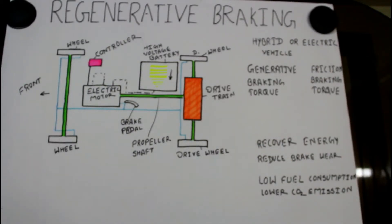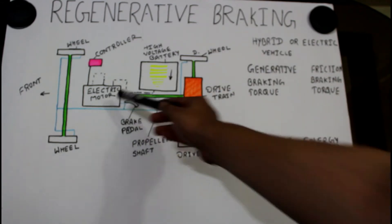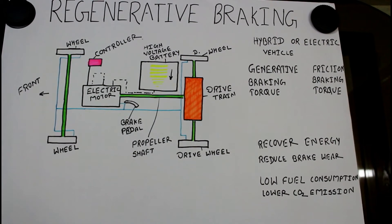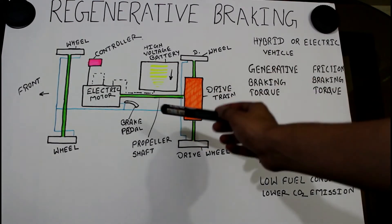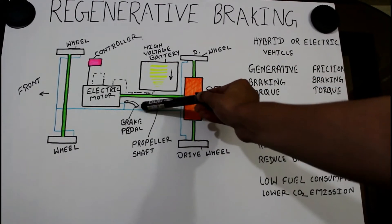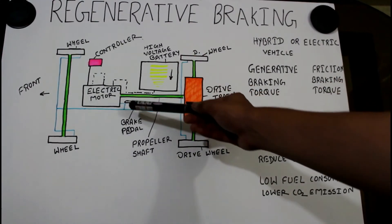As you all know about the electrical motor, when deceleration is required, we press the brake pedal and the electrical motor is converted into the generator.